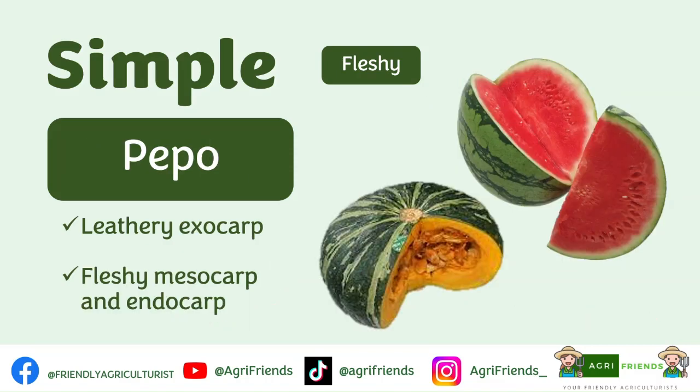Pepo is a fruit that has a rigid or leathery exocarp but with fleshy mesocarp and endocarp. In squash, the endocarp is the fibrous-like content. A pepo is a many-seeded fruit formed from one or multiple fused carpels. Other examples include zucchini and cucumber.